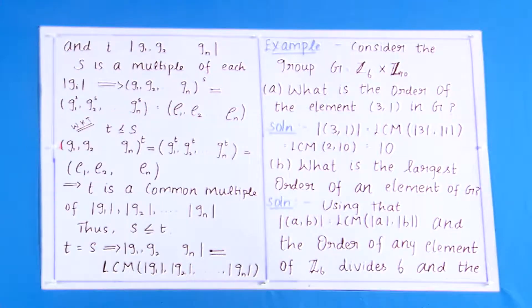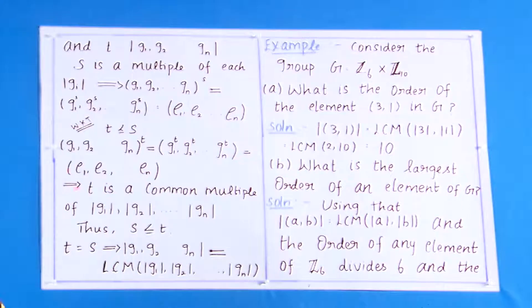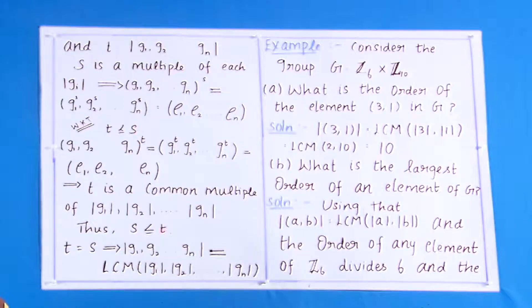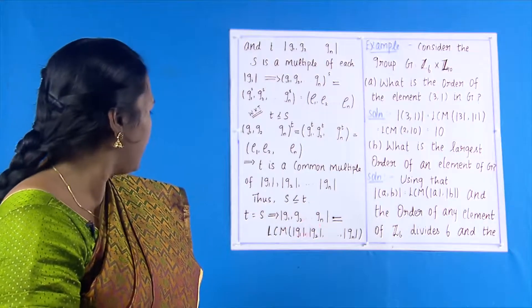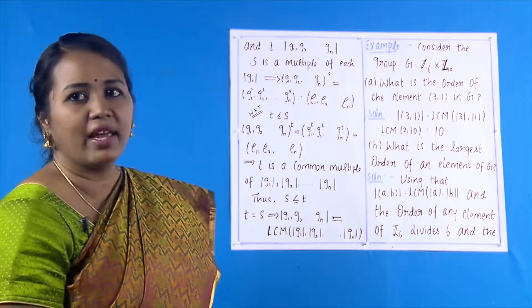Also, (g₁, g₂, …, gₙ)^t = (g₁^t, g₂^t, …, gₙ^t) = (e₁, e₂, …, eₙ). This shows that t is a common multiple of the orders of g₁, g₂, …, gₙ, so s is less than or equal to t. We have proved t ≤ s and s ≤ t, therefore t = s — the order of (g₁, …, gₙ) equals the LCM of the orders of g₁, …, gₙ. Hence the theorem is proved.